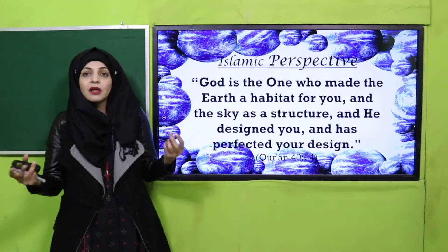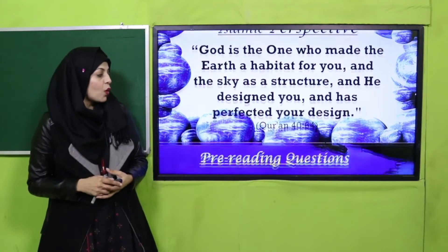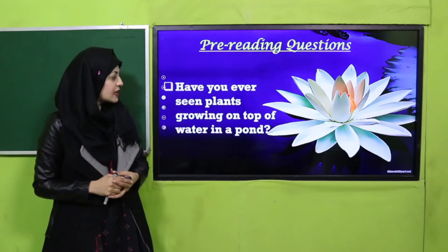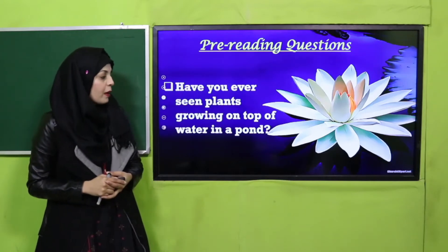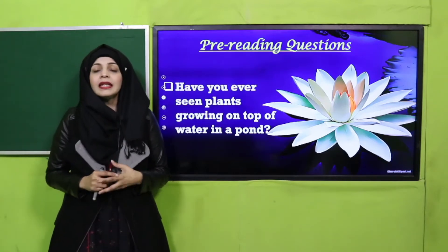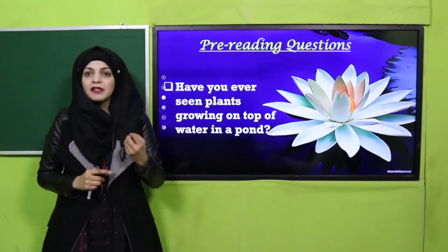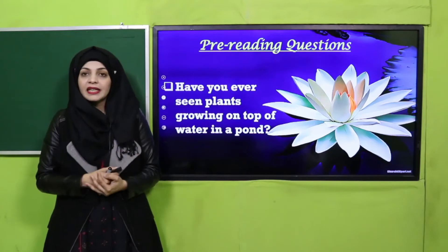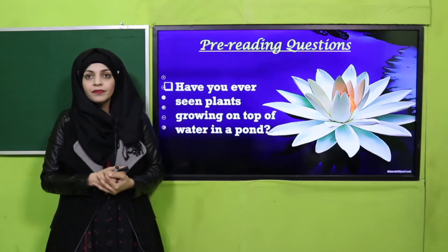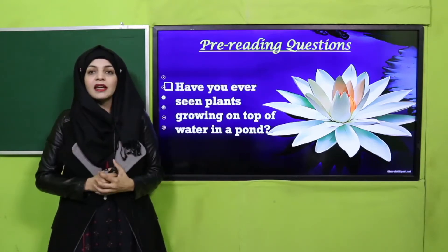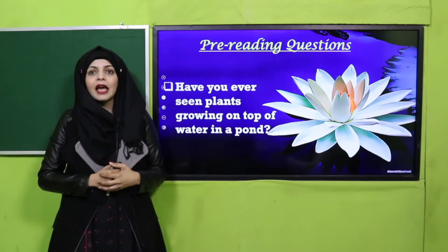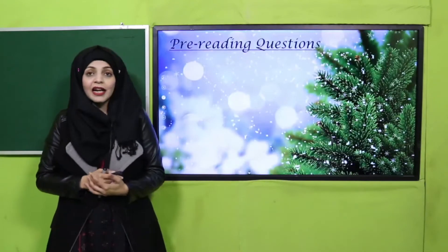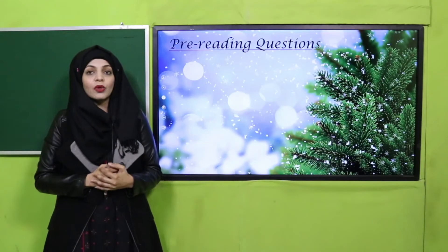Let's move to the pre-reading question: have you ever seen plants growing on top of water in a pond? When you visit outside, have you seen plants growing on a small pond? These plants have beautiful flowers which we call water lily. Maybe you have seen pictures of them. I will tell you how water lily and lotus grow on water.